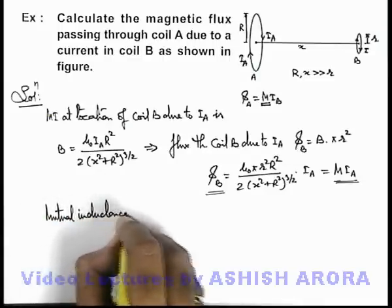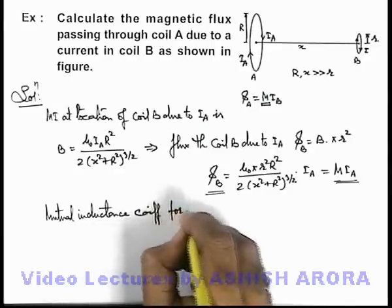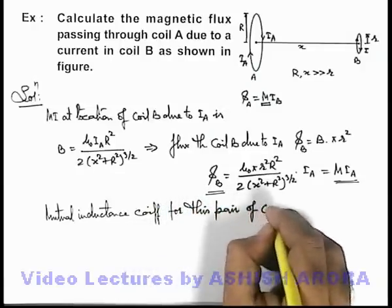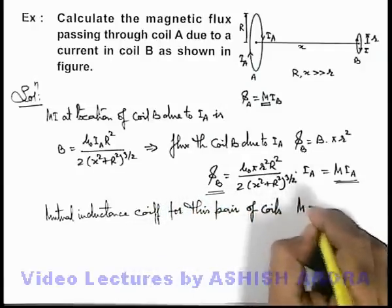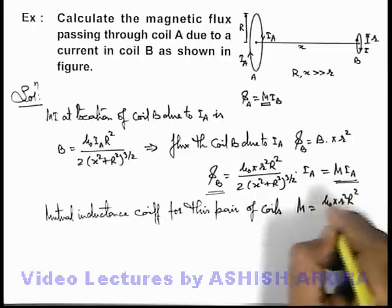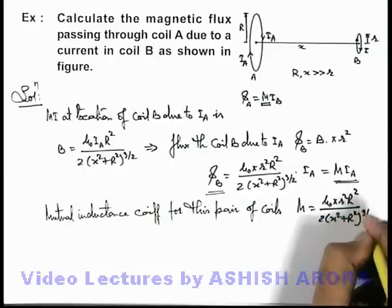For this pair of coils M, which can be given as μ₀πr²R² / 2(x² + R²)^(3/2).